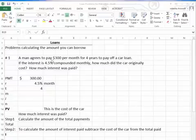A man agrees to pay $300 per month for four years to pay off a car loan. If the interest rate is four and a half percent compounded monthly, how much did the car originally cost? In other words, we have to be able to determine the amount we can borrow.